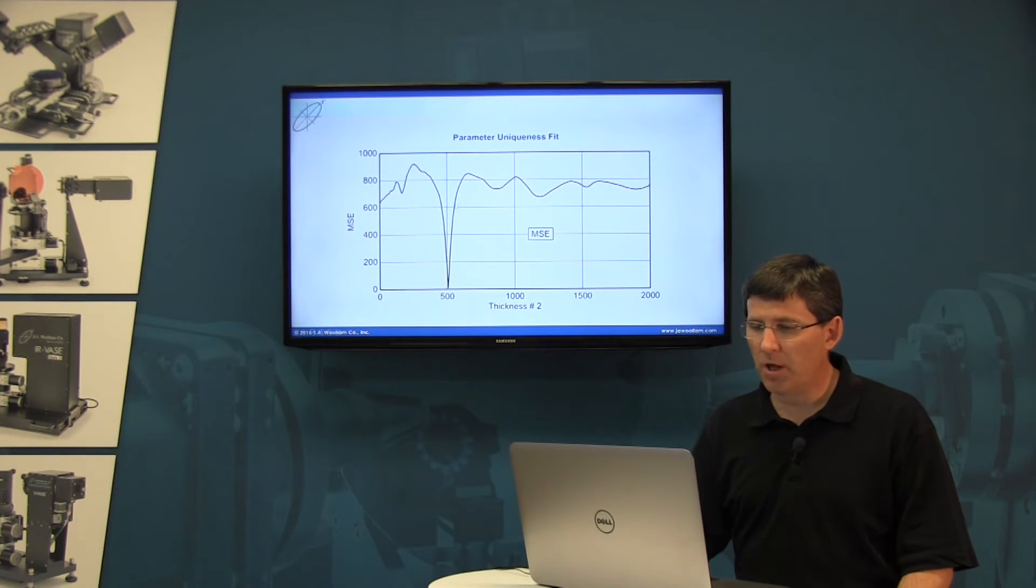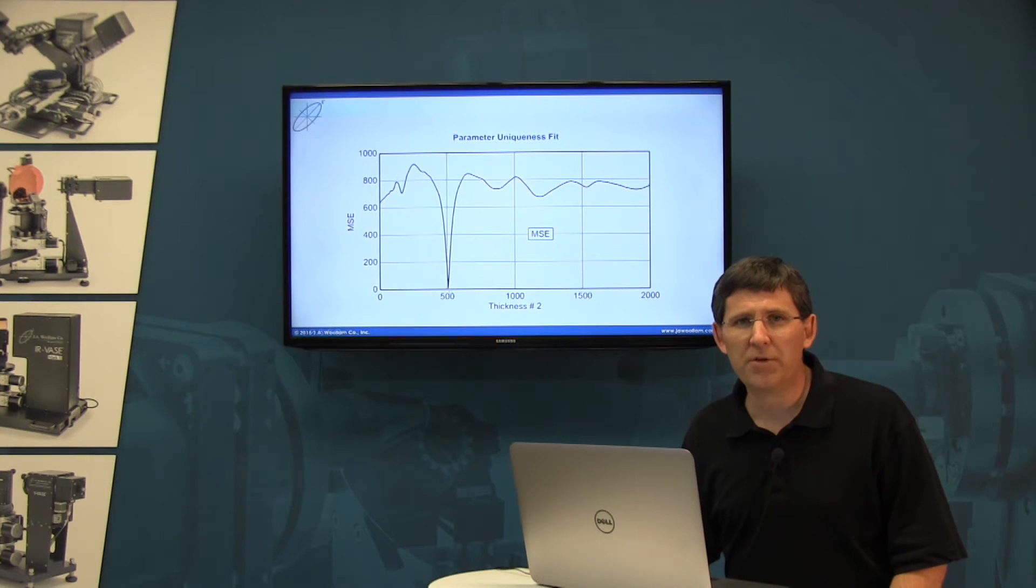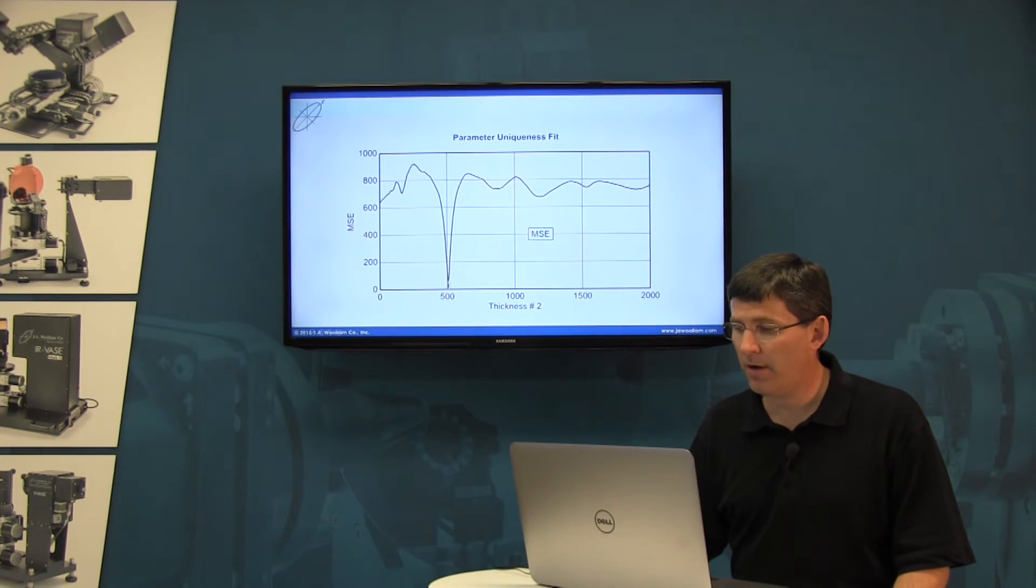If I'm close to the correct result, which is really close to 500 angstroms, or 500 nanometers in this case, the MSE can find the correct minimum.